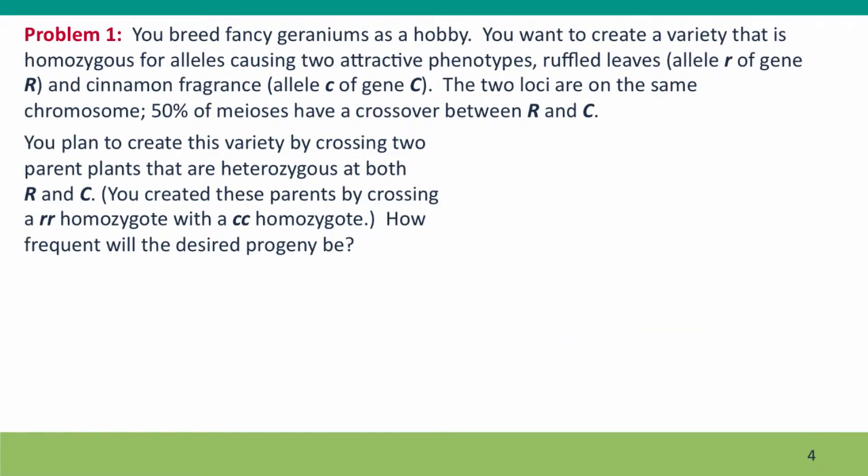So here's our problem. You're breeding fancy geraniums as a hobby. You want to create a variety that's homozygous for two recessive alleles. One is allele little r of gene R, which controls ruffled leaves. The other is allele little c of gene C, which controls a cinnamon-like fragrance. These two loci are on the same chromosome, and you're told that 50% of meioses have a crossover between the R and C genes.